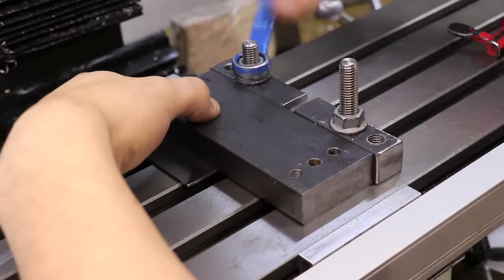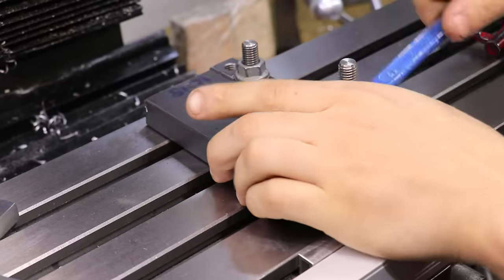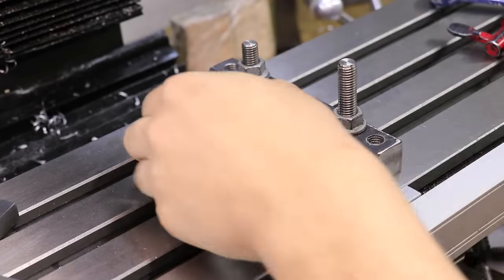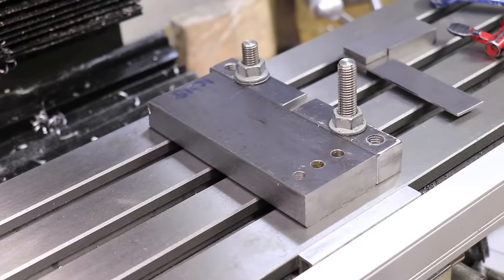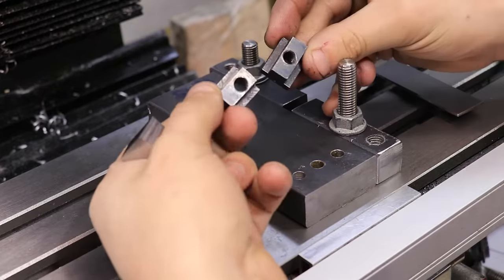I'll be using the two clamps as a sort of fixed jaw to clamp up against. They're a little bit tall for this workpiece but it's only a test. Next, I'll slide in two T-nuts.